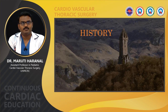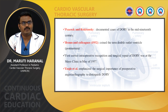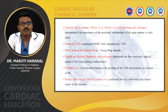Looking into the history of DORV, Peacock and Rokitansky documented cases of DORV in the mid-19th century. Brown and colleagues in 1952 coined the term double outlet ventricle in a post-mortem series. The first correct recognition of DORV intraoperatively and its surgical correction was at the Mayo Clinic in May 1957. Eagle et al. emphasized the surgical importance of preoperative angiography to distinguish DORV. Angelini and Leishman, Wilcox et al., Piccoli et al., and Anderson and colleagues demonstrated the importance of the positional relationship of the great arteries to each other in DORV.